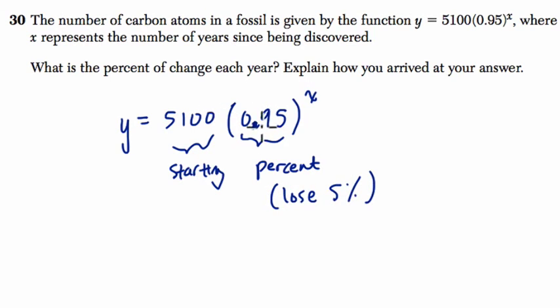If you take any amount of money or anything, multiply it by 95%, you'll have 5% less than 100. Essentially, you're losing 5% of your original value. So here, the percent change each year is just 5% loss. You want to specify if it's a loss or a gain. And how we know that is because 0.95 is 0.05 less than 1, or 95% is 5% less than 100%.